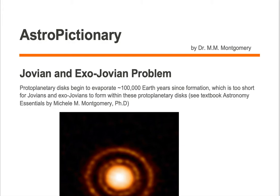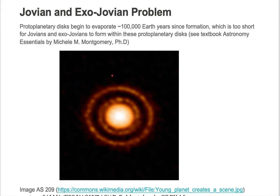The Jovian and exo-Jovian problem is that protoplanetary disks begin to evaporate around 100,000 Earth years since formation, which is too short for Jovians and exo-Jovians to form within these protoplanetary disks.